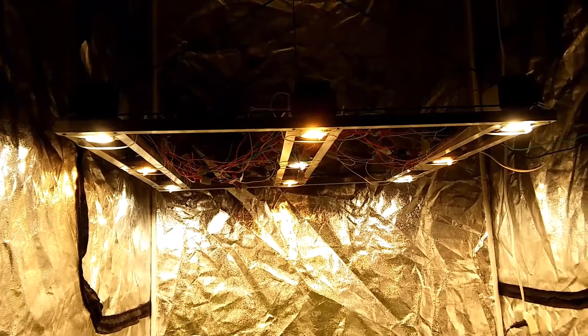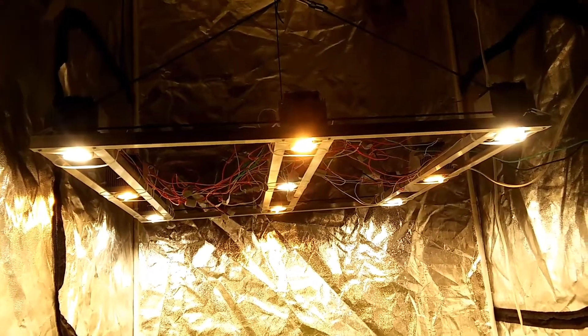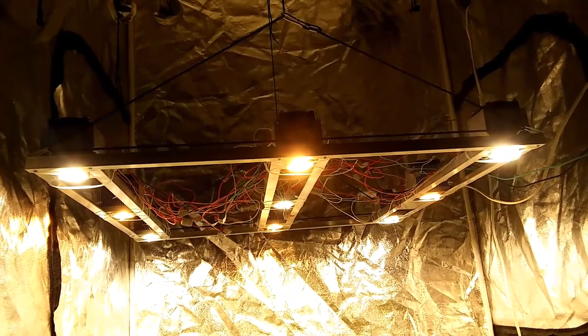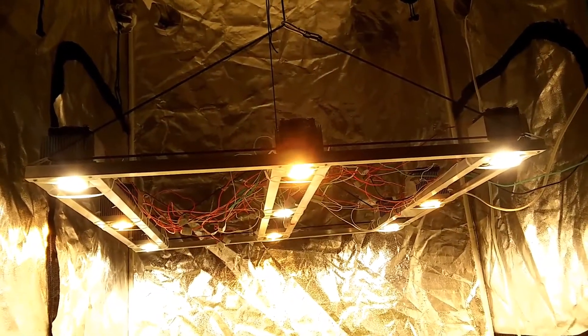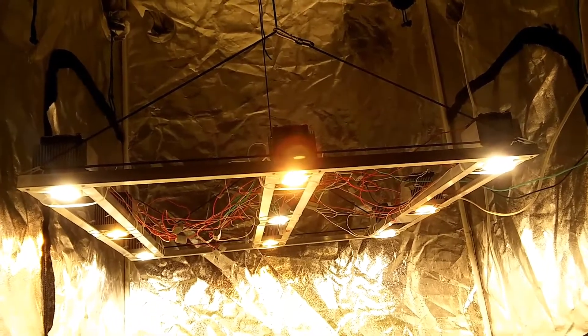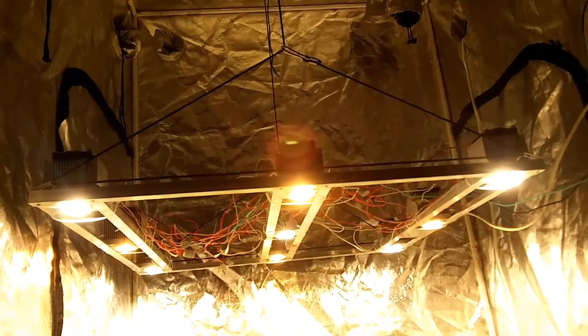Hey tubers, I just wanted to give you guys a little look at what I built here. This is nine Citizen 1212 COBs, a mix of 4000K and 2700K. There's five of the 4000K and four of the 2700K.